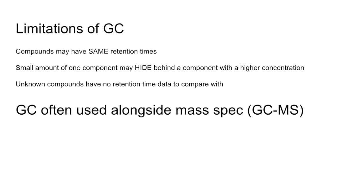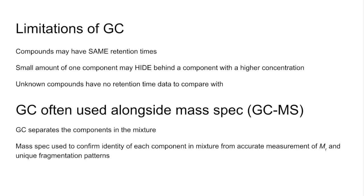Often they would use gas chromatography alongside mass spec—two analytical techniques side by side, called GC-MS for short. GC is great for separating compounds in a mixture, and then mass spec will be used to confirm the identity of each component because they can very accurately measure your molecular mass to four or five decimal places. Also, fragmentation patterns are unique, like a fingerprint, and you can compare that to your database.